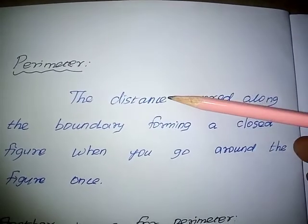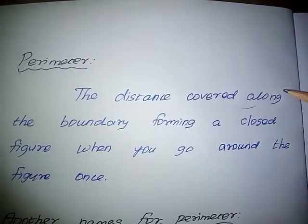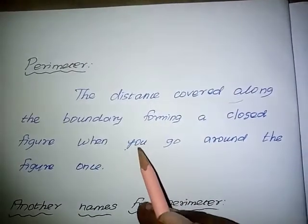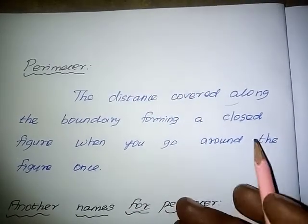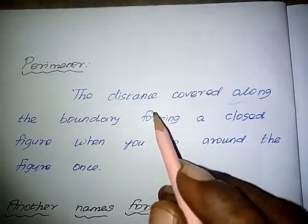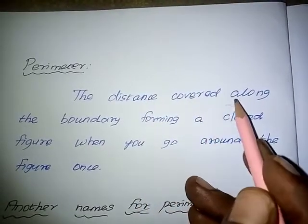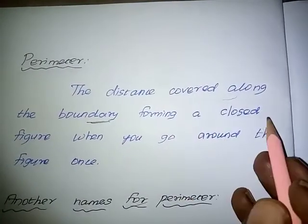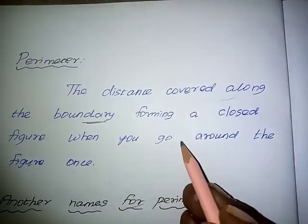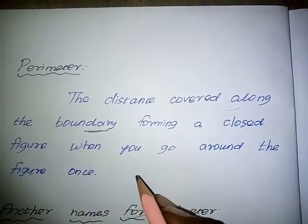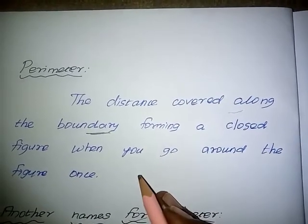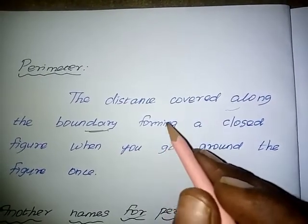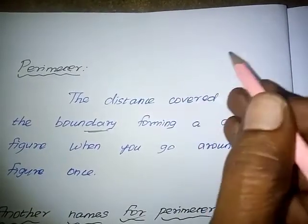Perimeter is the distance covered along the boundary forming a closed figure when you go around the figure once. That is called Perimeter. In general, the perimeter of any shape is equal to the sum of all sides.